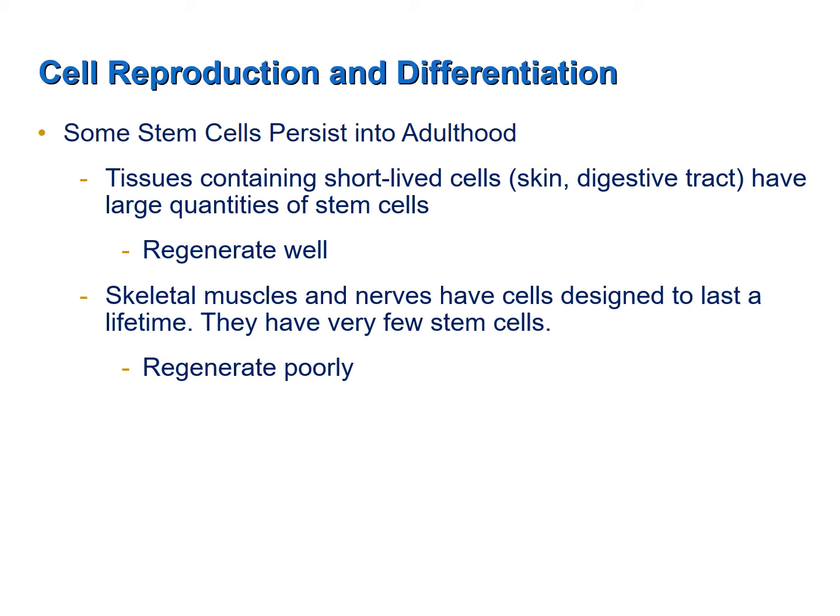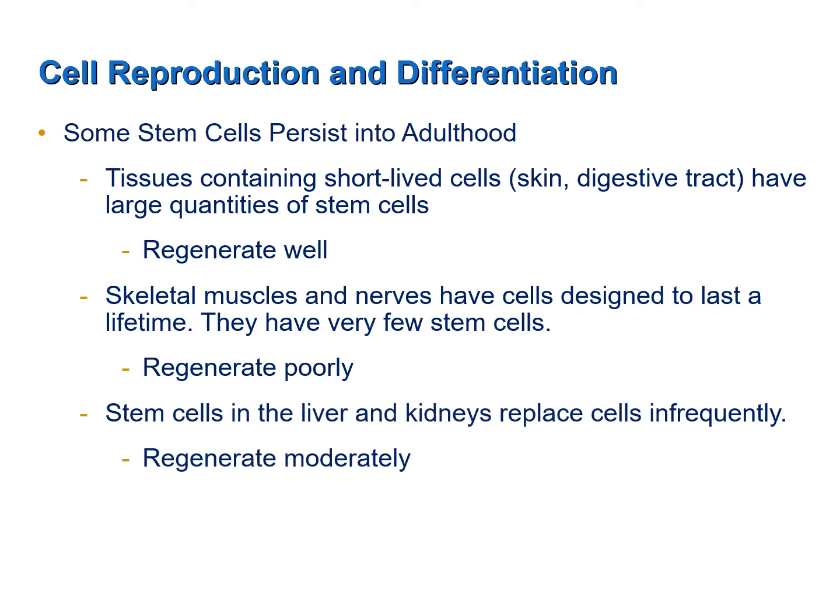At the opposite end of the spectrum are tissues that regenerate poorly because they have very few stem cells. For example, skeletal muscles and nerves were designed to have cells that basically last a lifetime; therefore they have very few stem cells and regenerate very poorly. If a neuron or a skeletal muscle cell is destroyed, it's pretty much gone for good and is not replaced. In between are tissues like the liver and kidneys that regenerate moderately because they have a moderate number of stem cells and were designed to replace cells only infrequently.